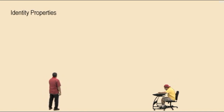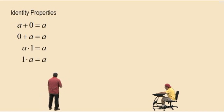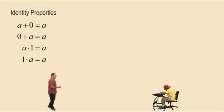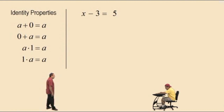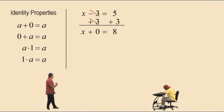Now the identity properties. For addition: if you add 0 to something, the result is identically the same thing — a plus 0 is a, and 0 plus a is a. For multiplication: a times 1 is a, and by the commutative property, 1 times a is also a. Going back to pre-algebra: when solving equations, we added 3 to both sides to cancel, leaving x plus 0 equals 8. By the identity property for addition, x plus 0 is x, so x equals 8.